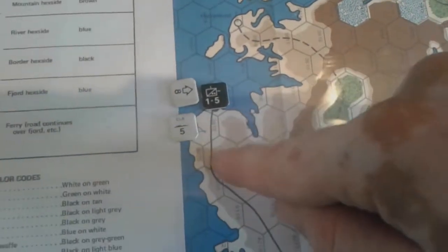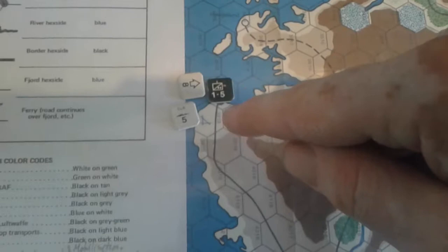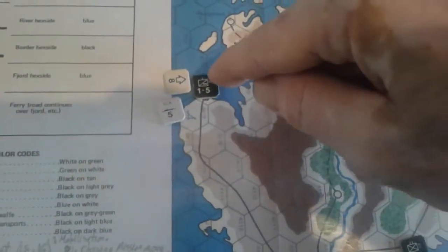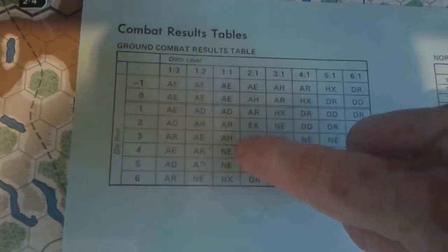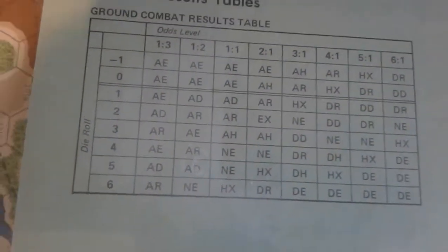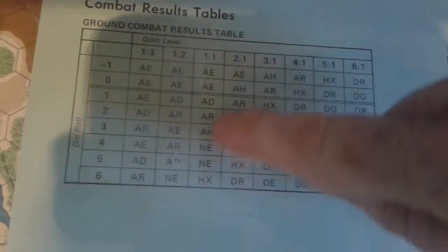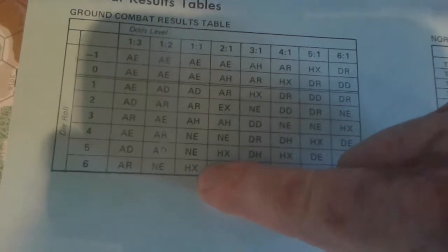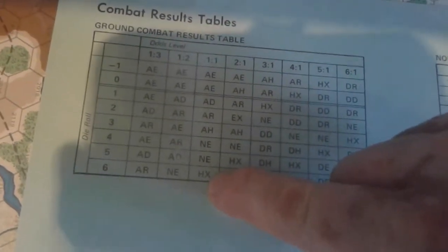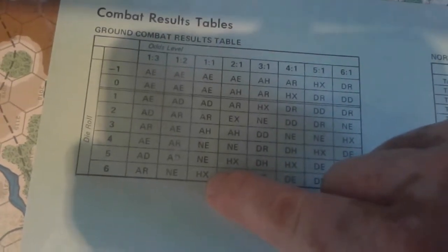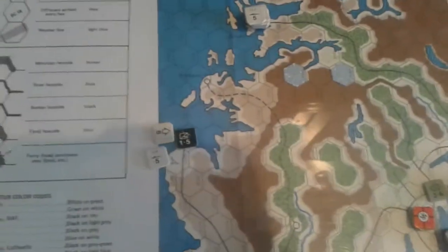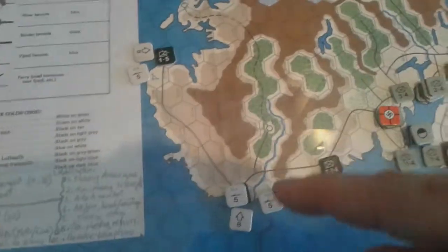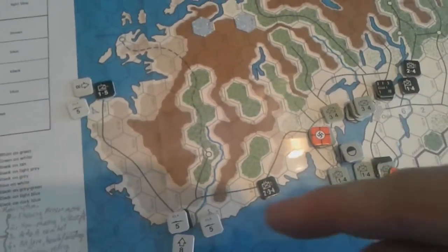The paratroopers landed here and moved up. In the Norwegian phase, the Norwegians brought up motorized units and the unit based here attacked them. At one-to-one odds I thought the paratroopers would be okay. You have attacker adverse no effect, but on a six it's HX - half exchange. That's actually great for the attacker at one-to-one odds because whoever has the least strength or the defender, and they were exactly equal with three strength points each. All the paratroopers went and that Norwegian unit you saw. That was terrible. We were hoping for three airfields and got one.